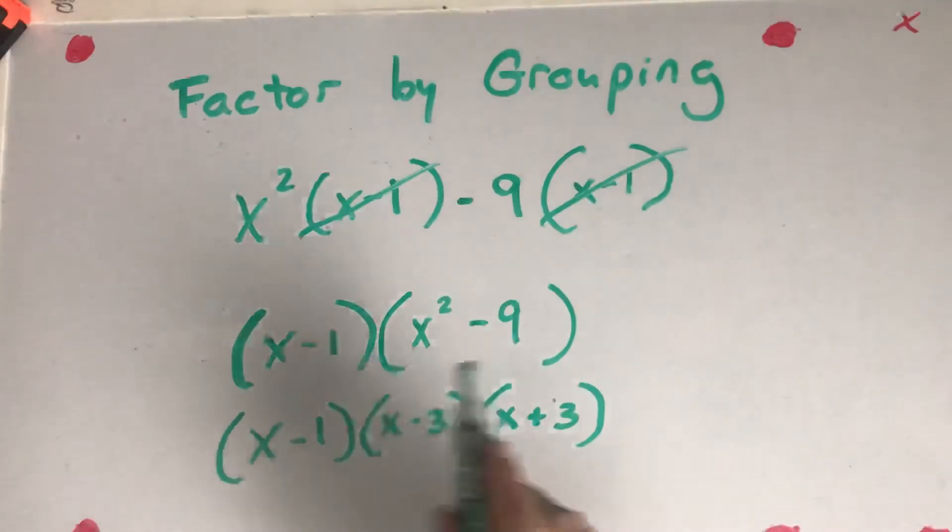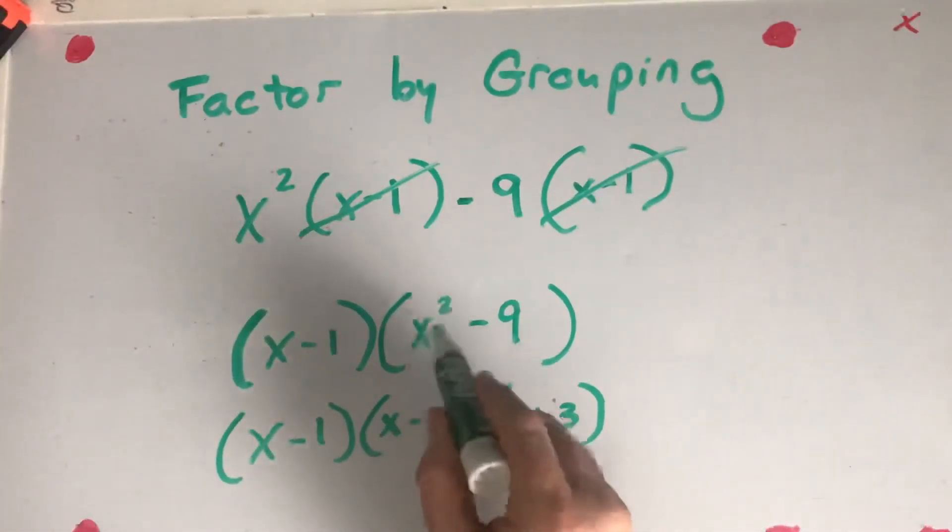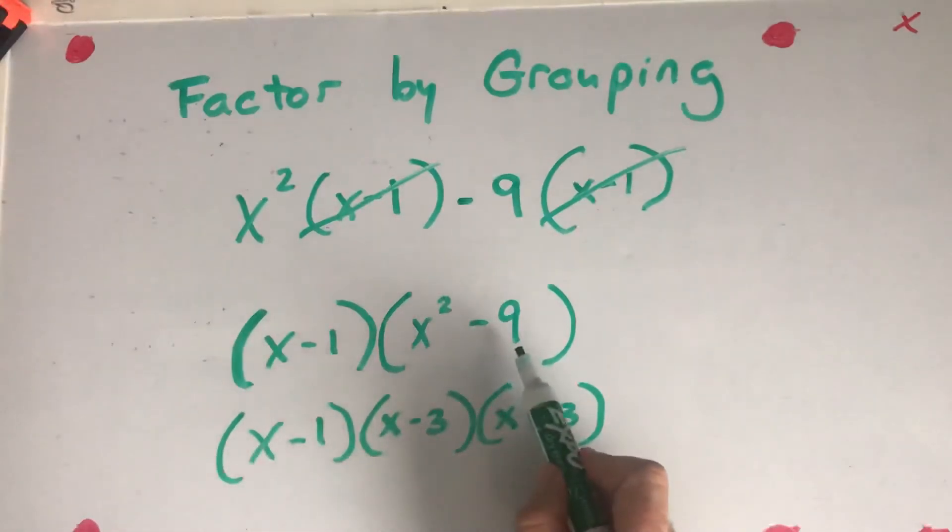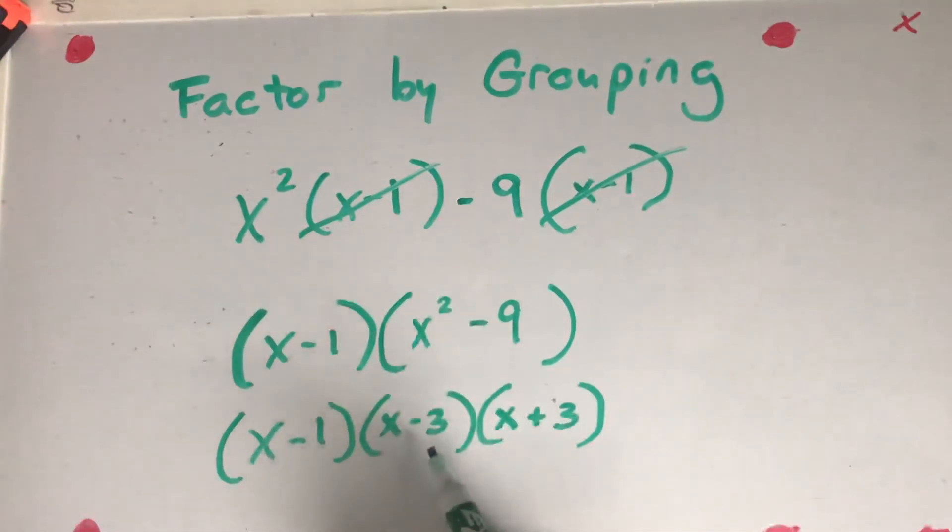That's because if I take the square root of x squared, it's x and x, right? The square root of 9 is 3, so 3 and 3. And these have opposite signs, minus and plus.